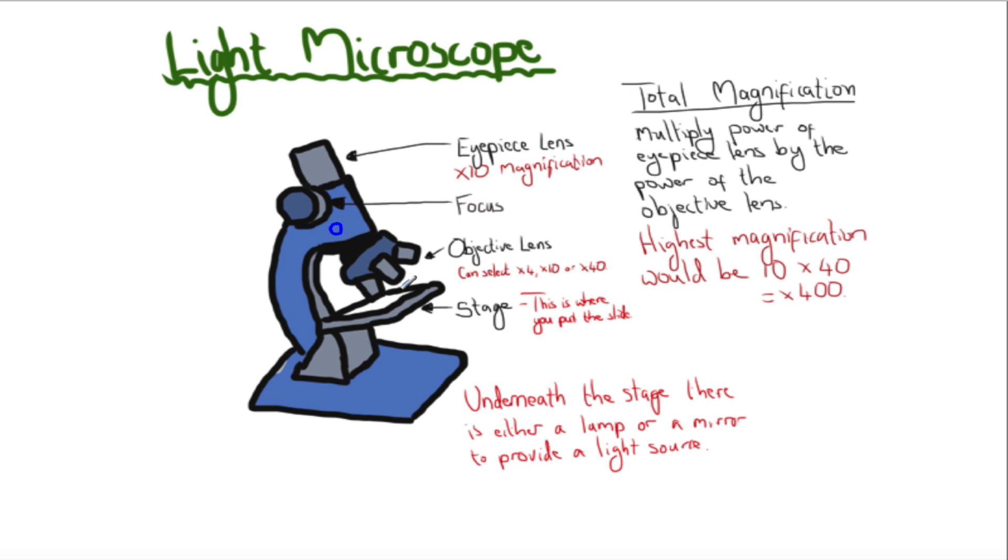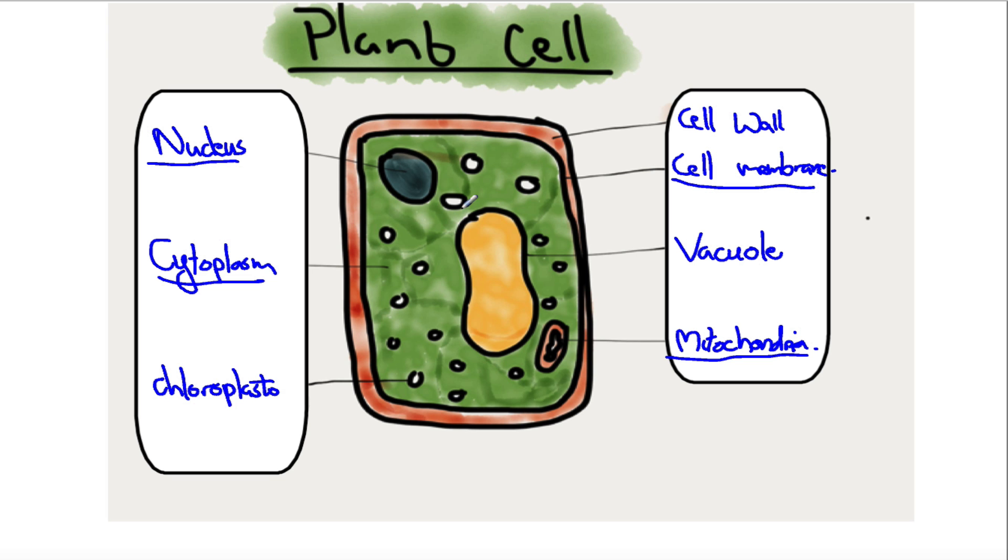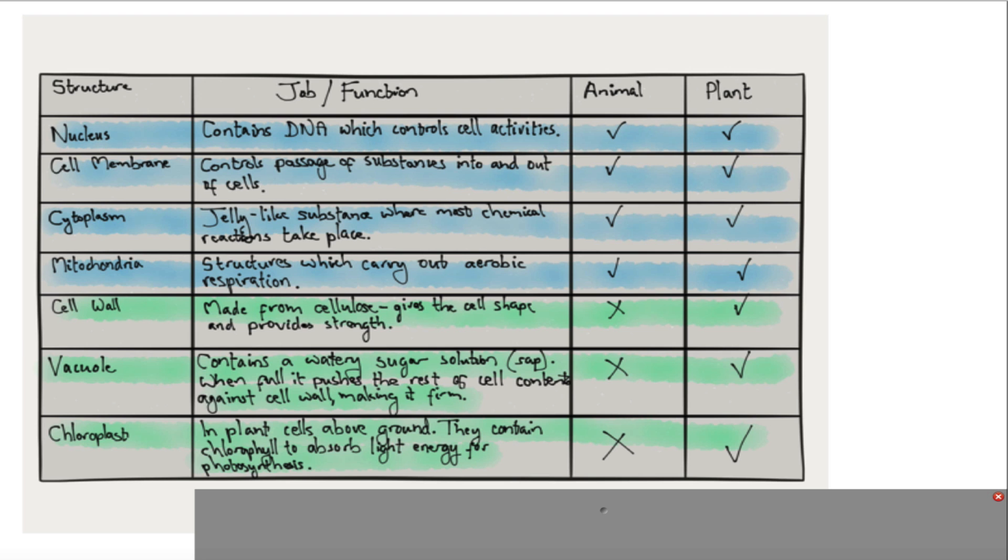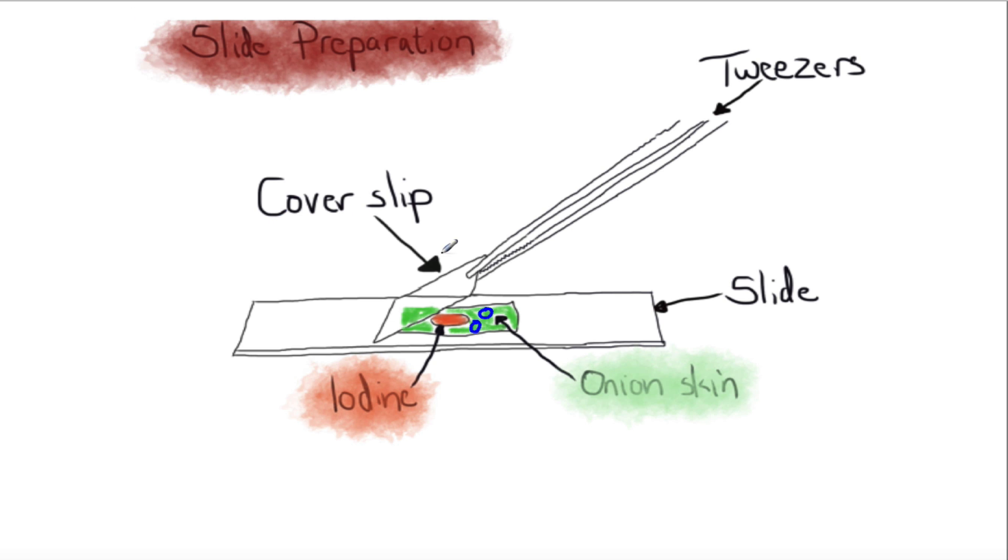When you can view it on the lower setting and turn the objective lens to the next higher setting, it should be very easy to find the image. Finally turn to the highest setting you can. You'd be asked to draw the cells you're looking at—I'd recommend drawing just three or four cells and labeling the parts you can see. You're not going to see all these parts; you'll probably only get the cell wall and nucleus, maybe more if you're doing really well. You certainly won't see the mitochondria, so don't draw them—only draw what is there.